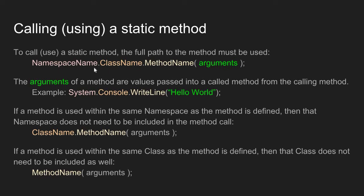The full path is: the namespace name, then a dot, followed by the class name, followed by a dot, followed by the method name. If the method requires values to be passed into it, you must include those values as part of the method call — in the calling method, those values are called arguments. For example, if main calls the WriteLine method, that method requires a string value, so we pass the argument 'Hello World'.